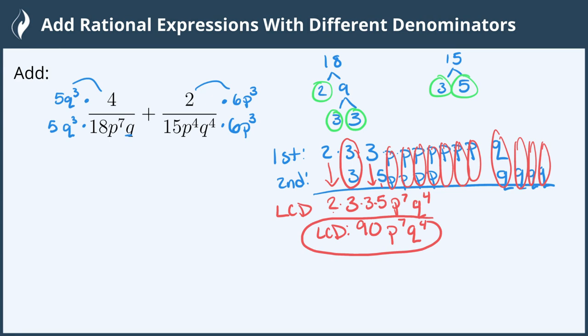Multiplying these together gives us in the numerator for the 1st one 20q to the 3rd and then we're adding 2. 2 times 6 is 12 p to the 3rd and 5 times 18 is 90 and then we have q to the 7th or p to the 7th and q to the 3rd and one more q gives us all 4 q's.